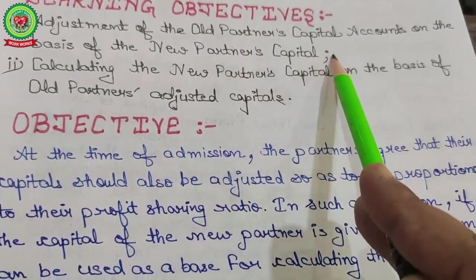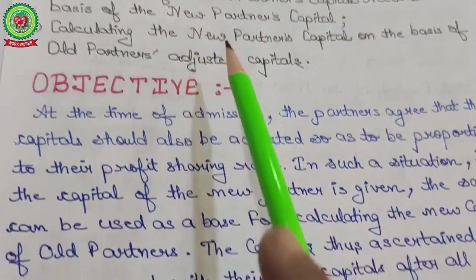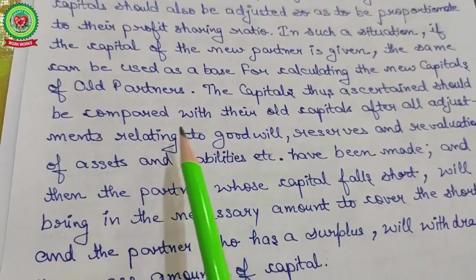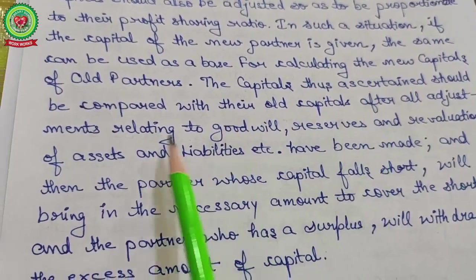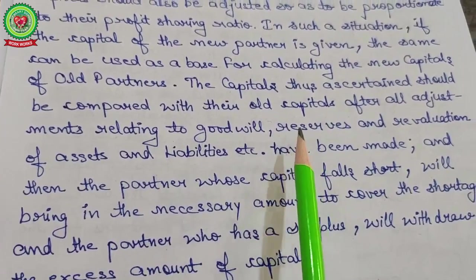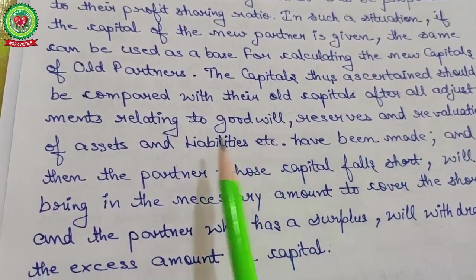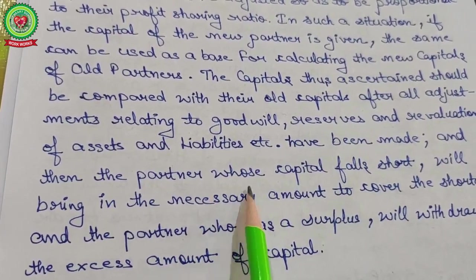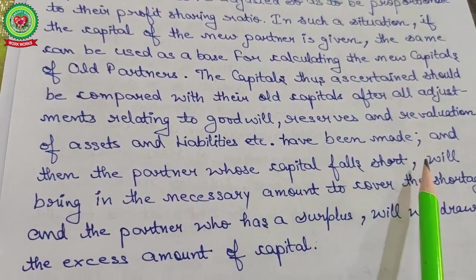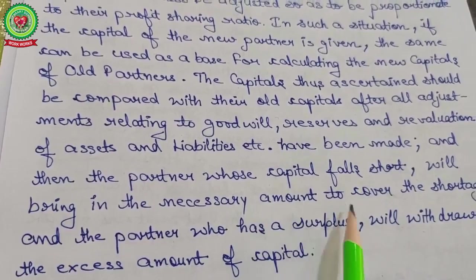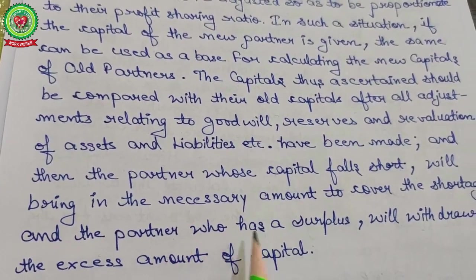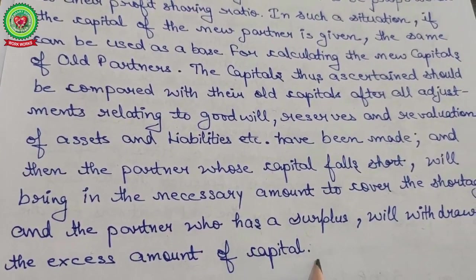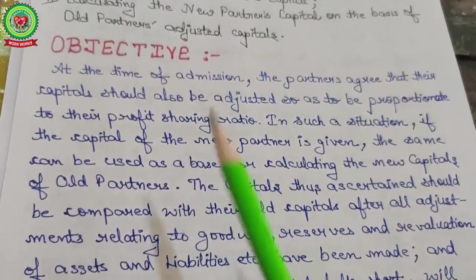This means you are going to adjust the old partners' capital on the basis of the new or incoming partner's capital. The new capital should be compared with their old capitals after all adjustments related to goodwill, reserves, and revaluation of assets and liabilities. The partner whose capital is short will bring in the necessary amount to cover the shortage, and the partner who has a surplus will withdraw the excess amount of capital.